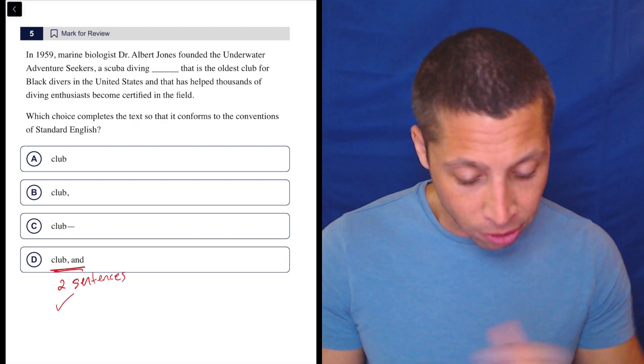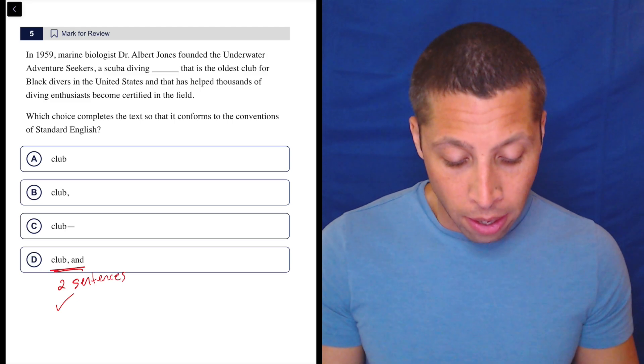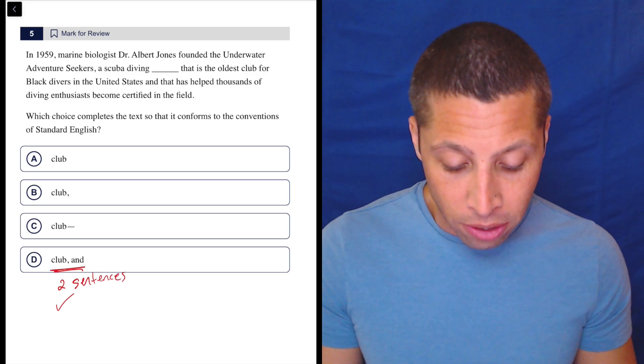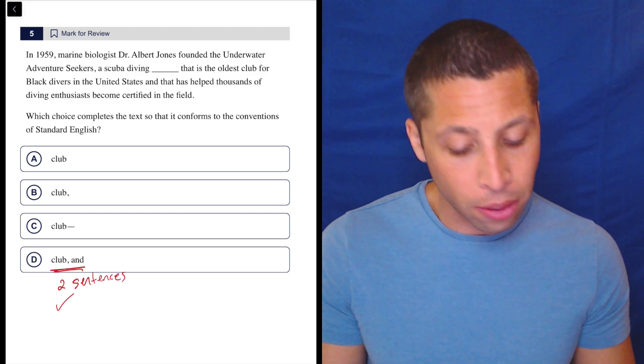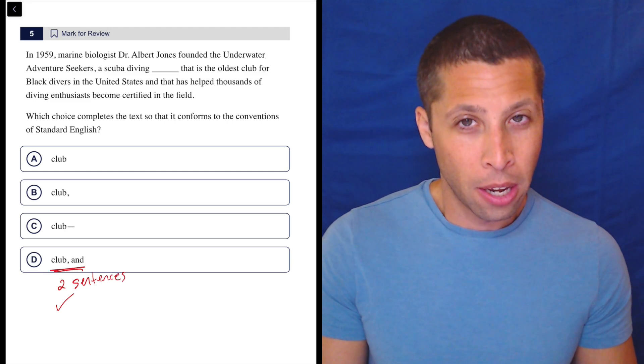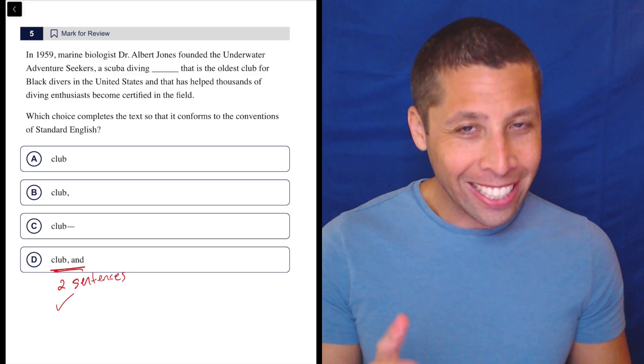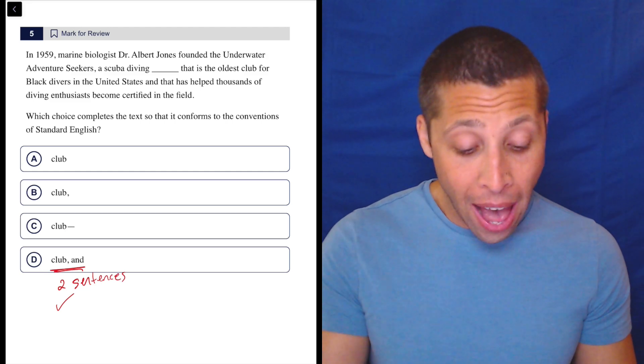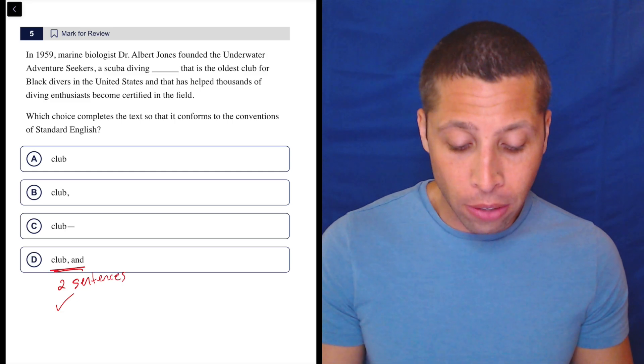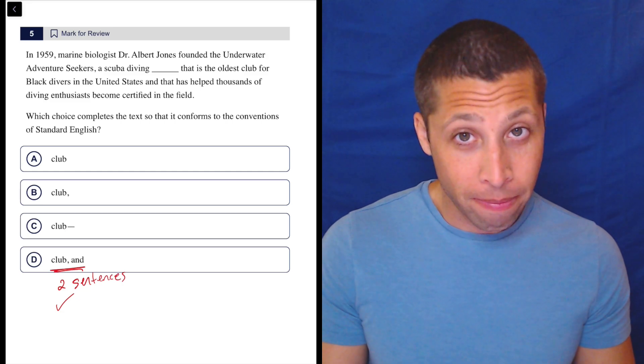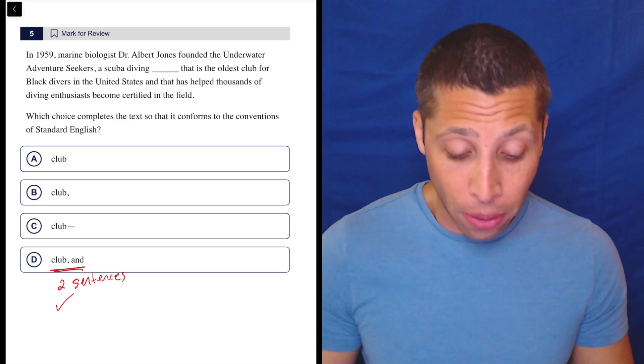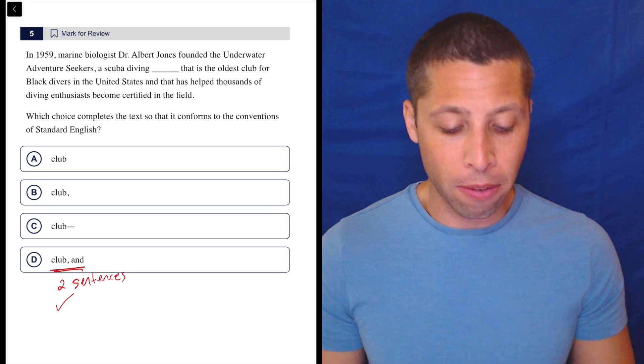Then we would skip the 'and' because that's just a connector word and continue. 'That is the oldest club for black divers in the United States and that has helped thousands of diving enthusiasts become certified in the field.' That one's tricky because it does kind of sound like a sentence. That could be a sentence, and so could the next part.